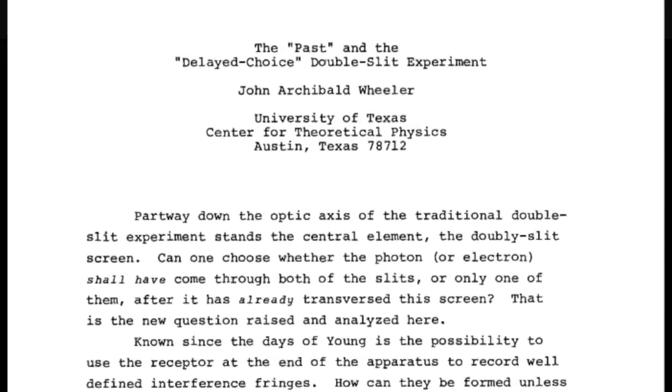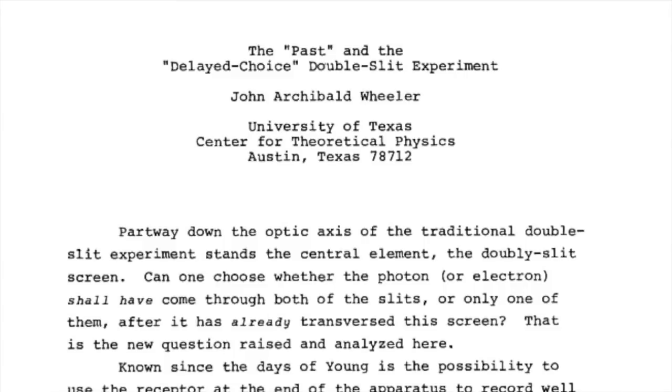Consciousness is information — it's an information field, it's data. In 1978, physicist John Wheeler proposed a new way of doing the double-slit experiment that might finally reveal what's really happening. He proposed what is called the delayed choice experiment, in which the decision of whether or not to observe the particles isn't made until after they have gone through the slits, but before they've impacted the detector.